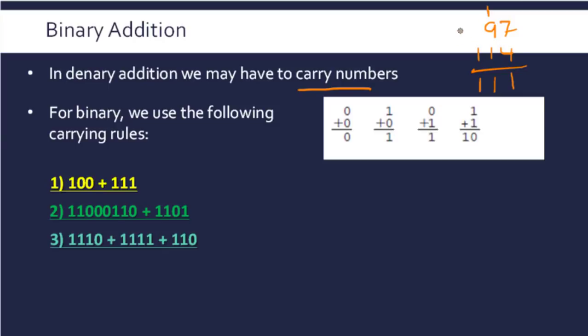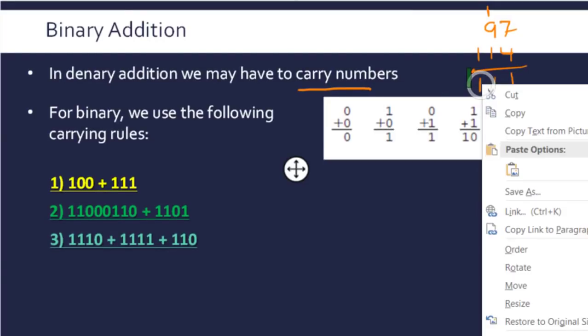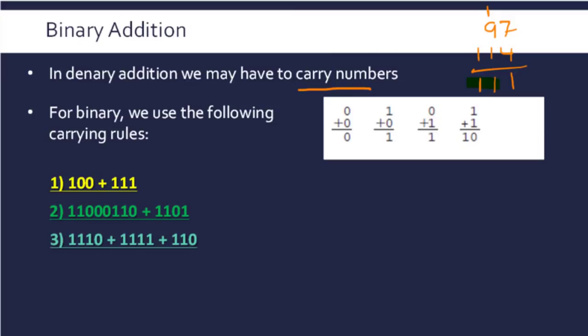So we have two carries in this. The important bit is we started off with two digits each and now we've ended up with three because it's overflowed out of our allocation.